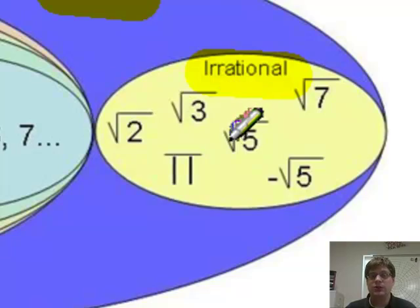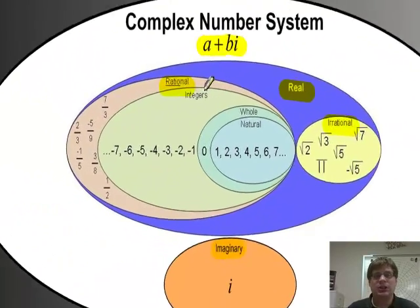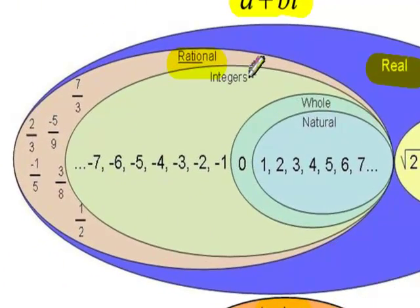Now rational numbers include your regular counting numbers, if you will: 1, 2, 3, 4, but also all your decimals that either terminate or repeat. Like 2 thirds is .66666 repeating, or 1 half which is .5. All these numbers also fall in the rational number set.